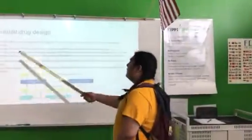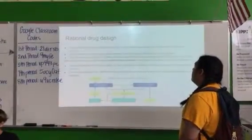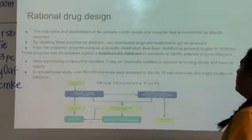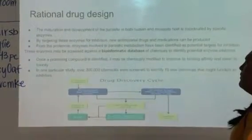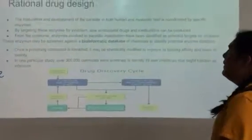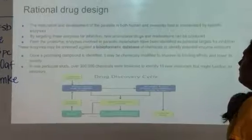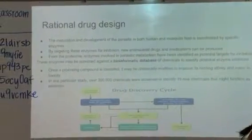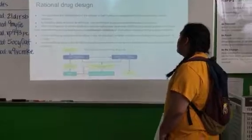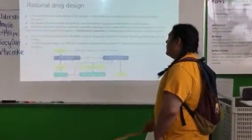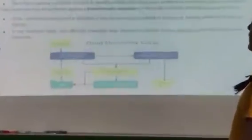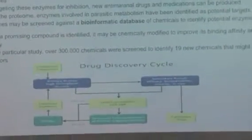Rational drug design. The maturation and development of the parasite in both human and mosquito hosts is coordinated by specific enzymes. By targeting these enzymes for inhibition, new antimalarial drugs and medications can be produced. From the proteome, enzymes involved in parasitic metabolism have been identified as potential targets for inhibition. These enzymes may be screened against a bioinformatic database of chemicals to identify potential enzyme inhibitors. Once a promising compound is identified, it may be chemically modified to improve its binding affinity and lower its toxicity. In one particular study, over 300 chemicals were screened to identify 19 new chemicals that might function as inhibitors.